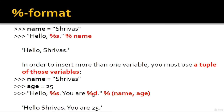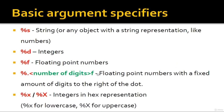These are the basic argument specifiers: %s for string, %d for integers, %f for floating point numbers, %.Nf for floating point numbers with N digits to the right of the decimal, and %x or %X for integers in hexadecimal representation — lowercase and uppercase respectively.